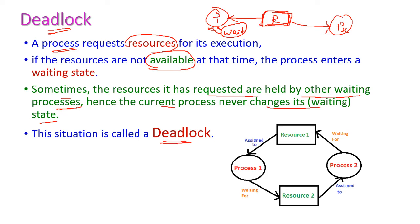In this diagram we have two processes: process 1 and process 2. For executing process 1, it requires two resources — resource 1 and resource 2 — simultaneously. Process 2 also requires the same resources. Resource 1 is assigned to process 1 and resource 2 is assigned to process 2. Now process 1 is waiting for resource 2, but resource 2 is already assigned to process 2.